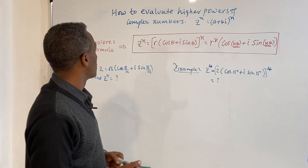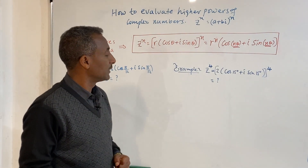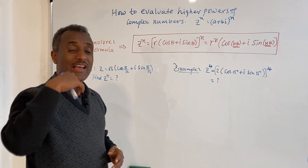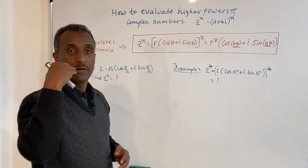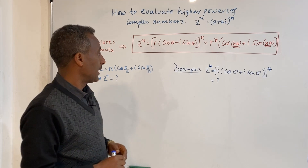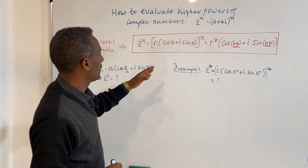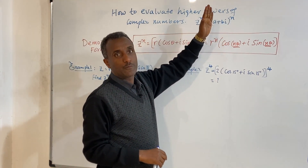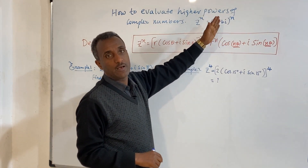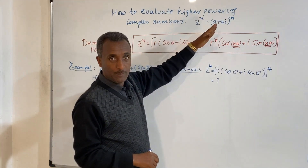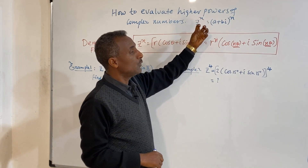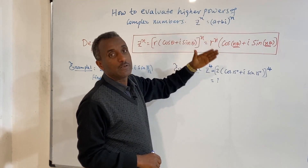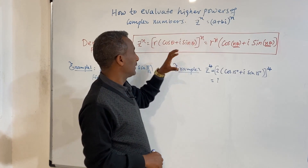Hello everyone, welcome to evaluating higher power complex numbers and complex numbers to the power of higher members — the power of 3, the power of 4, the power of 10, the power of 20. We have to write the same number in polar form.